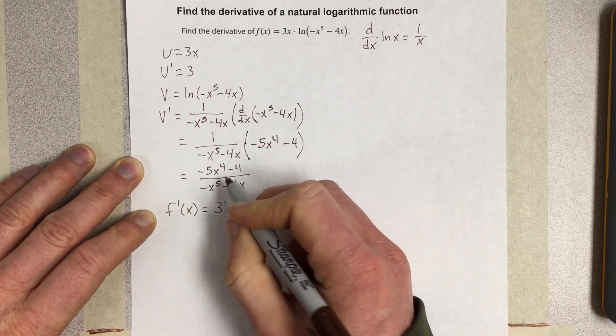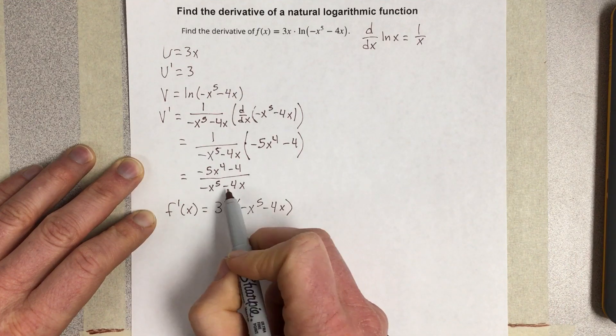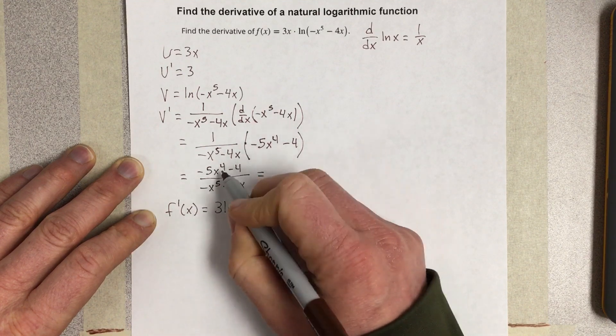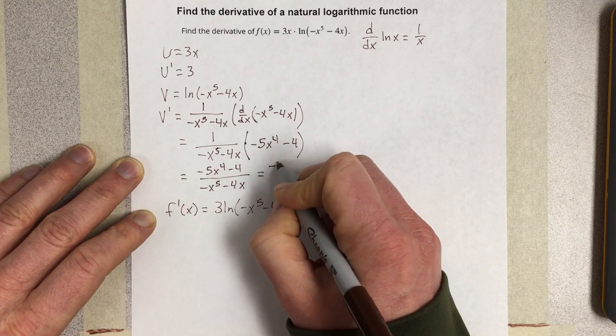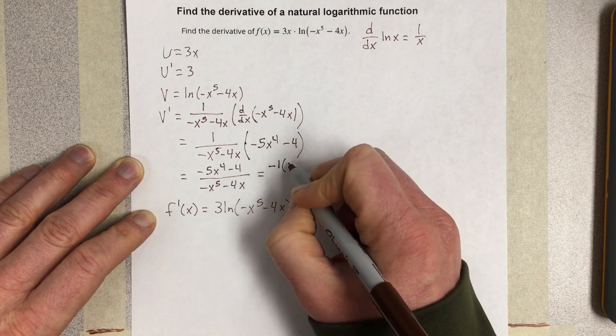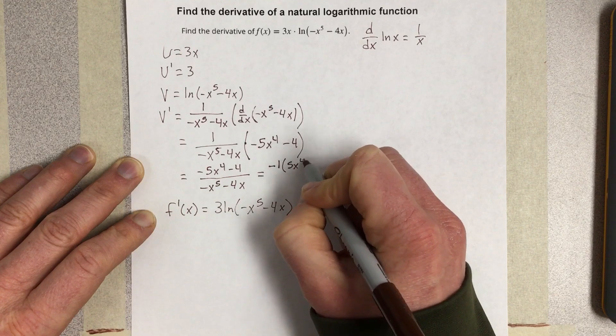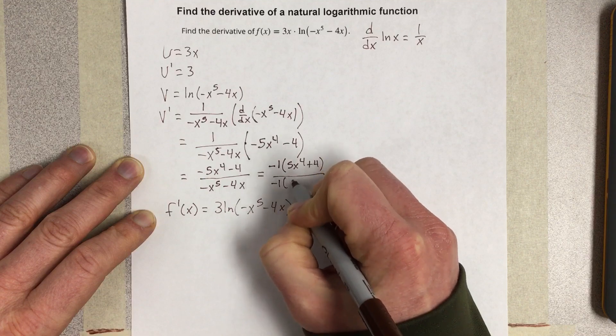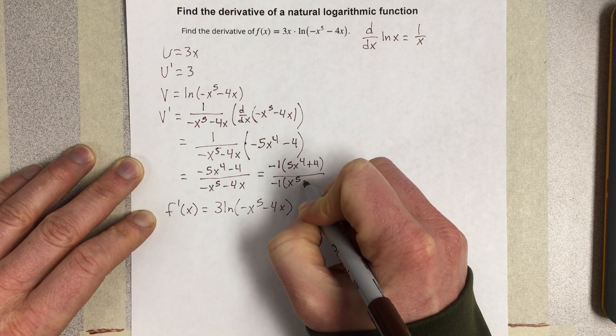And then I could factor a negative out of both the top and the bottom here. Let's simplify that just a little farther. If I factor a negative out of the top, I end up with a negative 1 times 5x to the 4th plus 4. Do the same thing on the bottom, negative 1 times x to the 5th plus 4x.